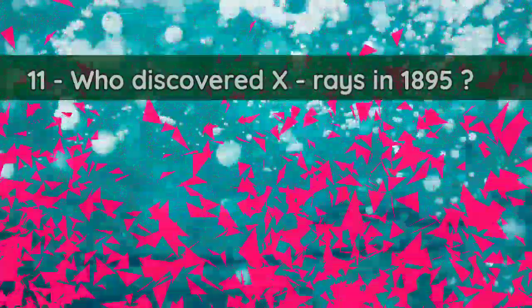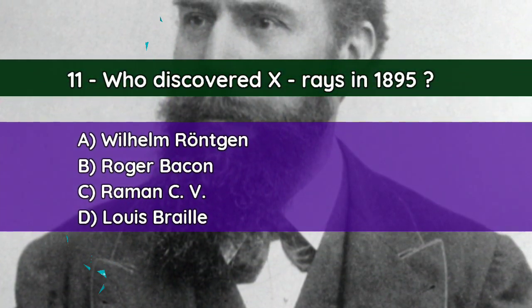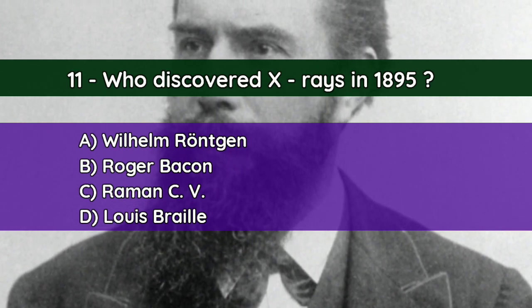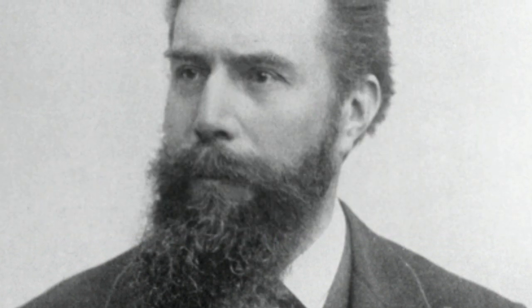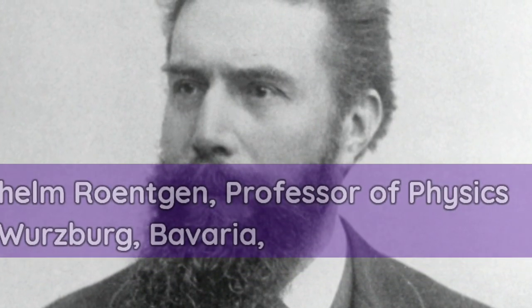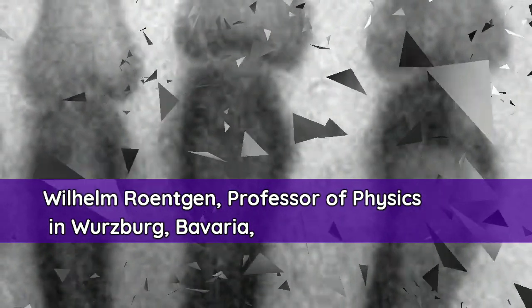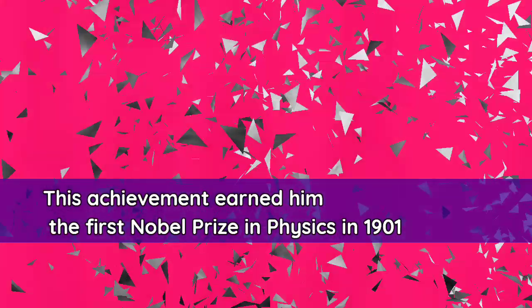Question number eleven: Who discovered X-rays in 1895? A. Wilhelm Röntgen, B. Roger Bacon, C. Raman C. V., D. Louis Braille. And the correct answer is A — Wilhelm Röntgen. Wilhelm Röntgen, professor of physics in Würzburg, discovered X-rays in 1895 accidentally while testing whether cathode rays could pass through glass. This achievement earned him the first Nobel Prize in Physics in 1901.